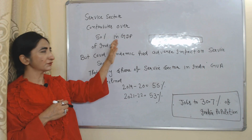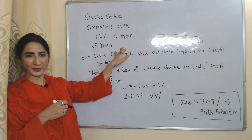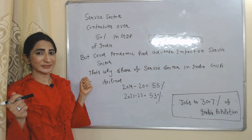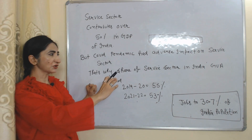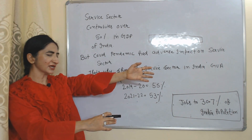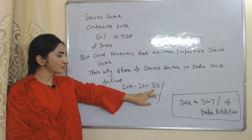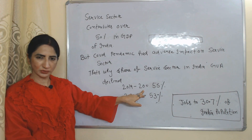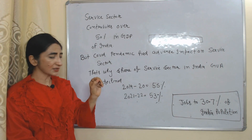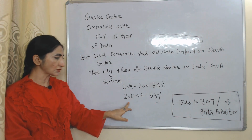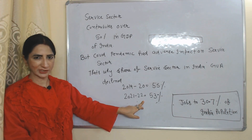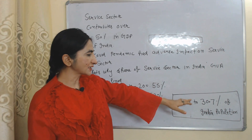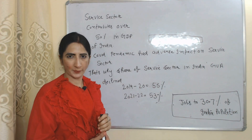The service sector contributes over 50% to India's GDP. However, the COVID pandemic had an adverse effect on the service sector, causing its share in India's GVA to decline from 55% in 2019–20 to only 53% in 2021–22. The service sector provides jobs to 30.7% of India's population.